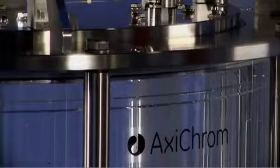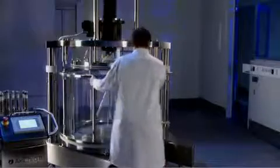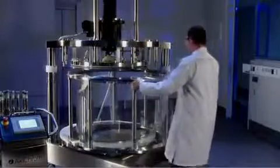The column tube is raised from the bottom. The adapter is raised above the column tube. The column tube can then be swung out completely.